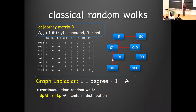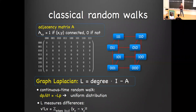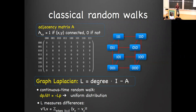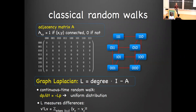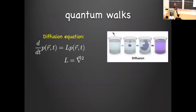Another way to think about the Laplacian is as a quadratic form measuring differences. Take a vector v and look at v-transpose L v: this is the sum of the squares of the differences of v along every edge. If v is the same everywhere this is zero; if v differs a lot along edges it's big. This gives an intuitive picture of the eigenvectors: the zero eigenvector is constant everywhere, a low-lying eigenvector varies slowly over the graph, and a high eigenvector varies quickly — those fine details are washed out quickly by the walk.